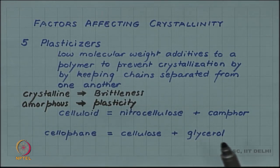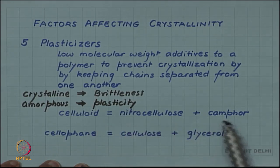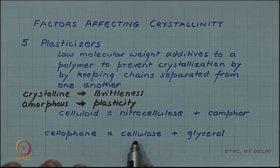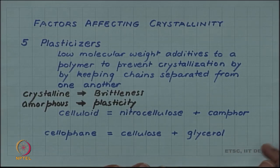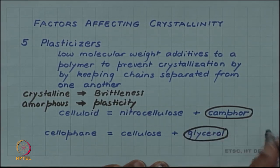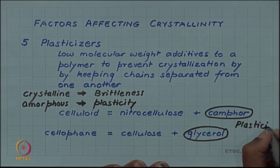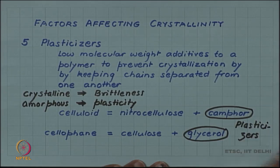Some well-known examples: celluloid has nitrocellulose as its polymer with camphor added as plasticizer. Cellophane has cellulose as its main chain with glycerol added as plasticizer. Both camphor and glycerol are plasticizers in these polymers, and they promote amorphous structure.